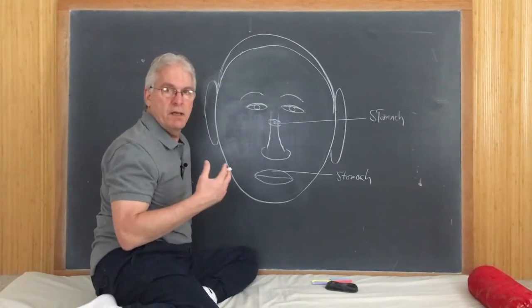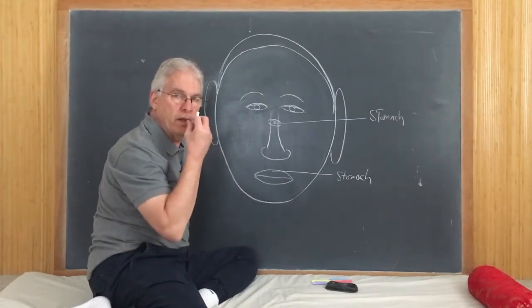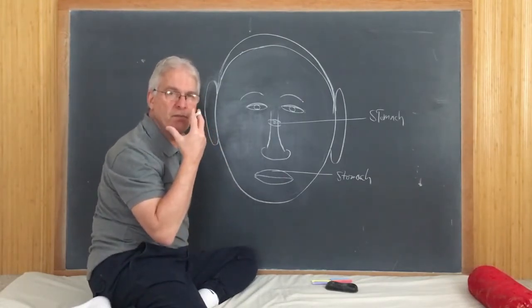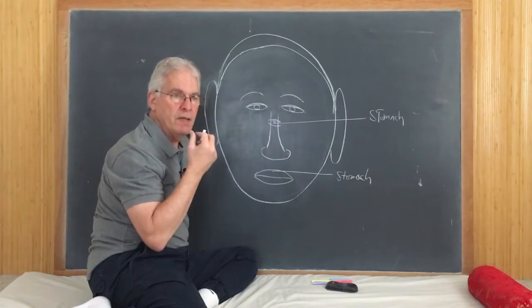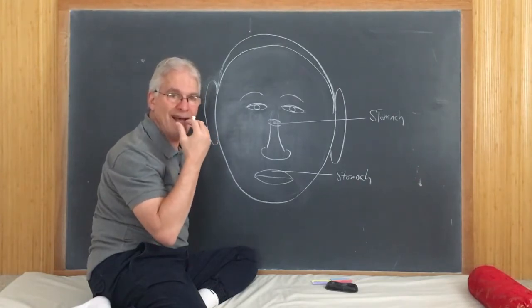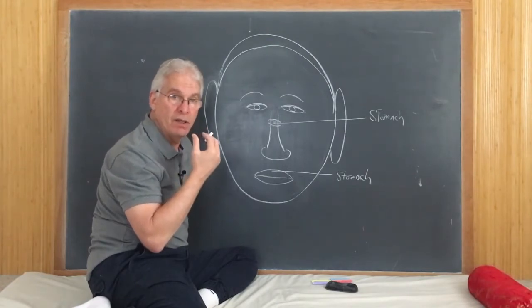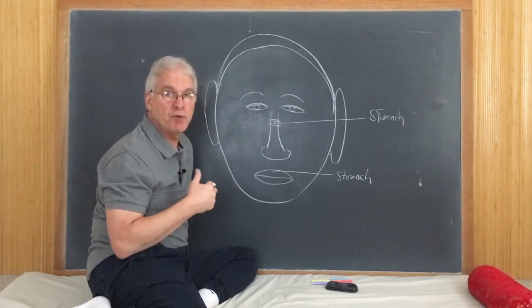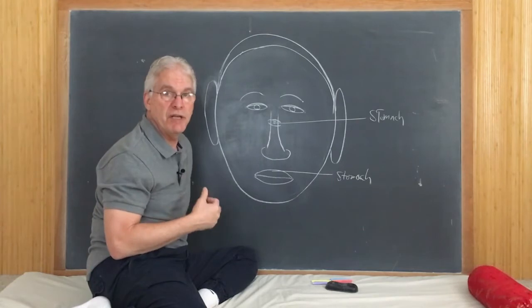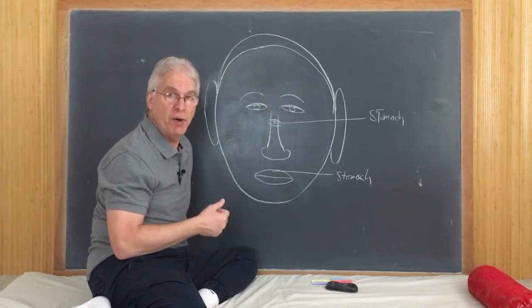And there we might see swelling. Look that the lip has become more puffy. Sometimes we might notice that it has a purple color or even a pale color. And this can show different problems with the blood flow and oxygenation going to the tissue of that organ.